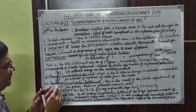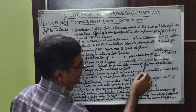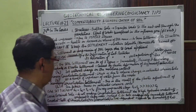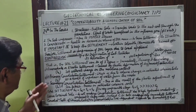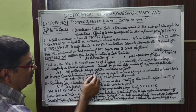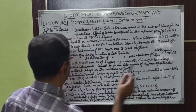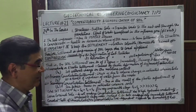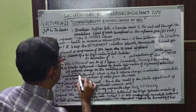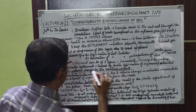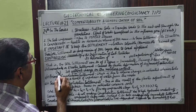Soil settlement is of three types: immediate or elastic settlement, primary consolidation settlement, and secondary consolidation settlement. Primary and secondary settlements are the consolidation settlements. Immediate elastic settlement is caused by elastic deformation of dry, moist, or saturated soil without any change in moisture content. This immediate settlement, represented as Se or Si, occurs without change in moisture.